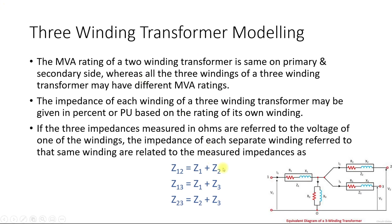A three-winding transformer, instead of two windings, has three windings. Looking at its equivalent circuit, the first winding is known as winding one or high voltage (HV), the second winding is known as winding two or low voltage (LV), and the third is known as the tertiary voltage or winding three. R0 and X0 represent losses within the transformer. Unlike a two-winding transformer where both windings share the same MVA rating, in a three-winding transformer all three windings may have different MVA ratings.